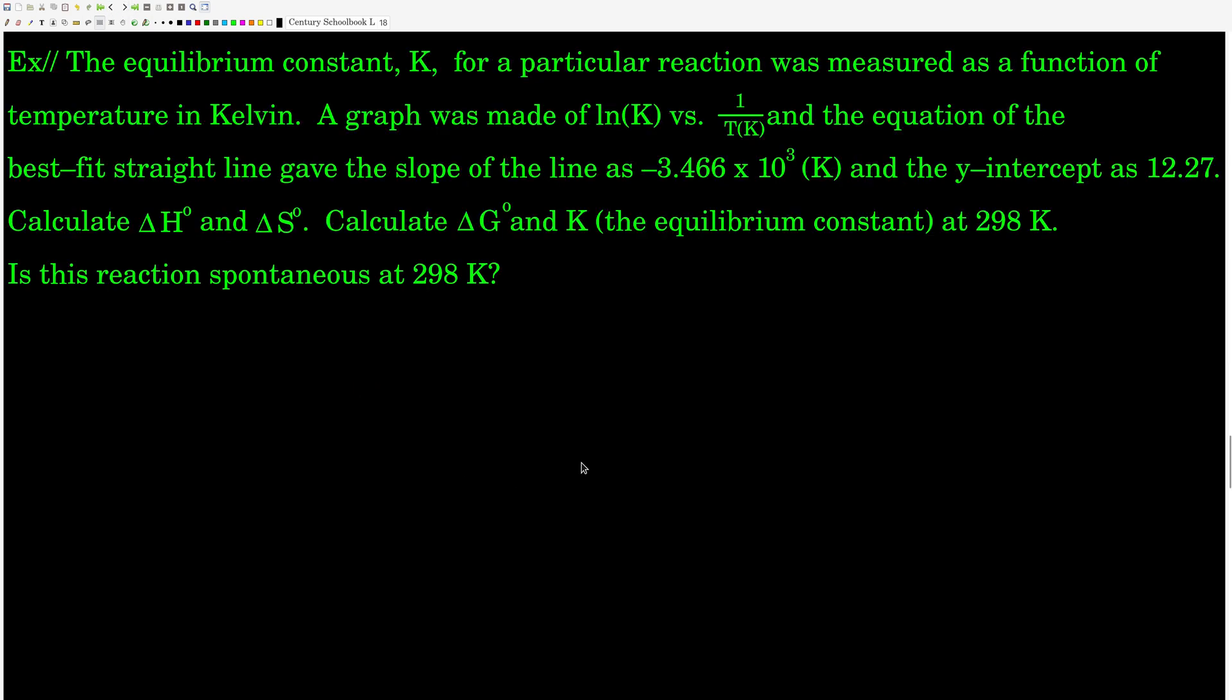So let's do a little example. We measure the equilibrium constant for a particular reaction as a function of temperature in Kelvin. So what we're talking about. We make a graph of natural log of K versus 1 over the temperature in Kelvin, and we get the equation of the best fit straight line. And from that equation, we see that the slope is negative 3.466 times 10 to the third units of Kelvin, and the y-intercept is 12.27, no units.